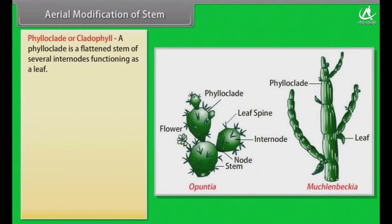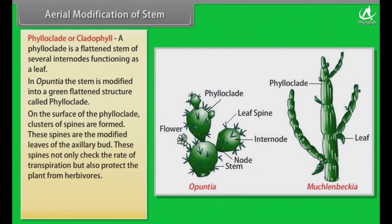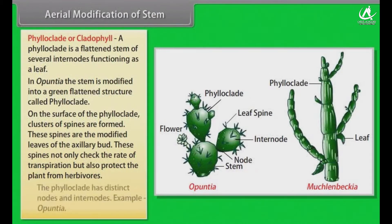A phylloclade is a flattened stem of several internodes functioning as a leaf. In Opuntia, the stem is modified into a green flattened structure called a phylloclade. On the surface of the phylloclade, clusters of spines are formed — these spines are the modified leaves of the axillary bud. These spines not only check the rate of transpiration but also protect the plant from herbivores. The phylloclade has distinct nodes and internodes. Example: Opuntia.